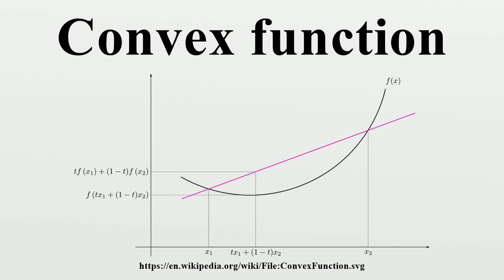Examples: The function f(x) = x² has f″ = 2 at all points, so f is a convex function. It is also strongly convex with strong convexity constant 2. The function f(x) = x⁴ has f″ = 12x², so f is a convex function. It is strictly convex, even though the second derivative is not strictly positive at all points. It is not strongly convex. The absolute value function is convex, even though it does not have a derivative at x = 0. It is not strictly convex. The function x^p for p ≥ 1 is convex. The exponential function is convex; it is also strictly convex, but it is not strongly convex, since the second derivative can be arbitrarily close to 0.